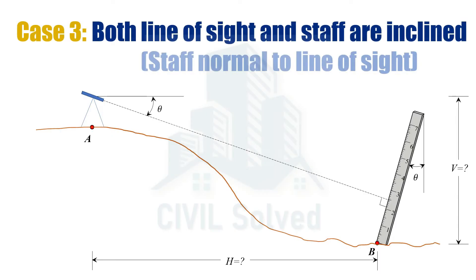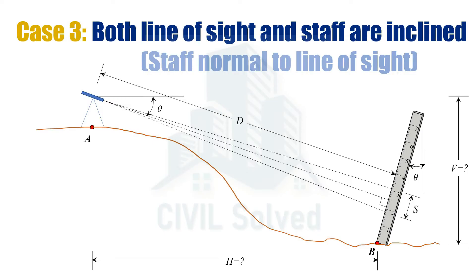But in case number three, the staff is held in such a way that the line of sight is perpendicular to the staff. This is possible only when we incline the staff to the same angle as the angle of the telescope. We then need the upper stadia and lower stadia readings — their difference gives us the staff intercept. From the basics, if the line of sight is perpendicular to the staff, the distance D along the line of sight can be easily calculated.